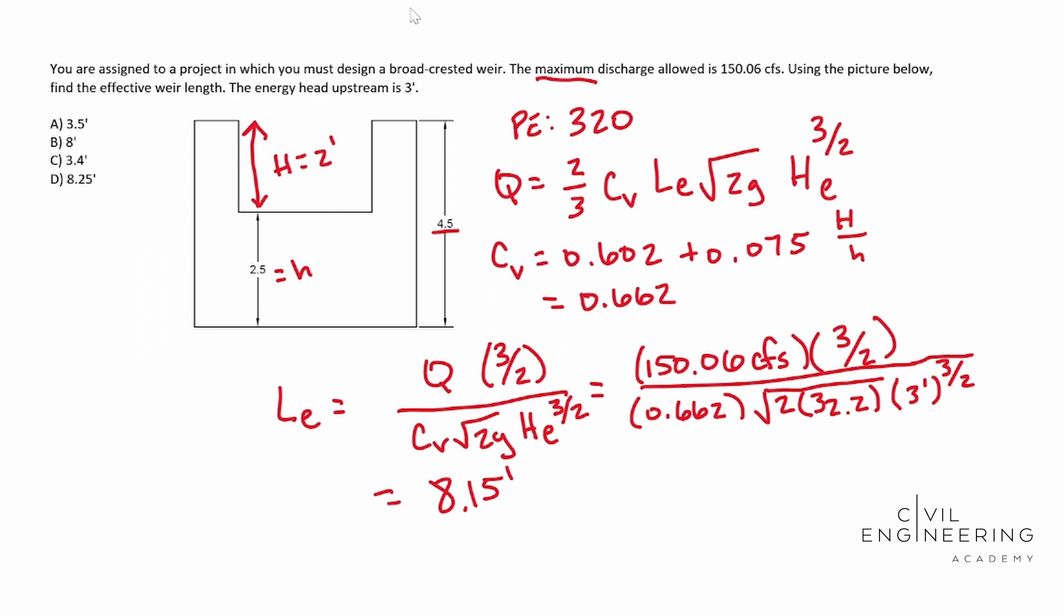So B, whenever you plug in eight into our original formula right here, you actually end up with 147.22 cubic feet per second. Okay, so let's try 8.25. Well, when you plug that one in, you end up with 151.83.